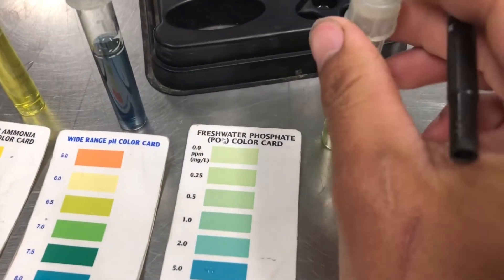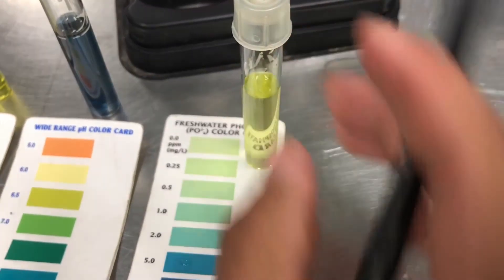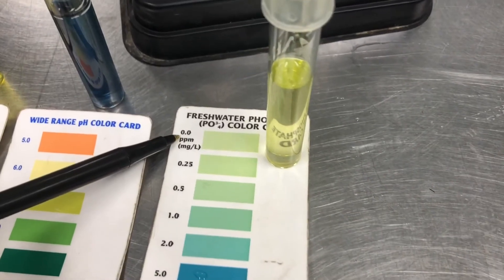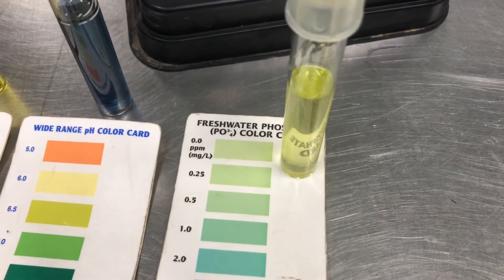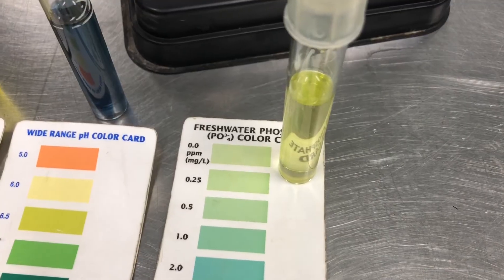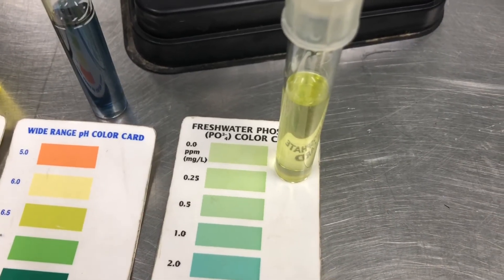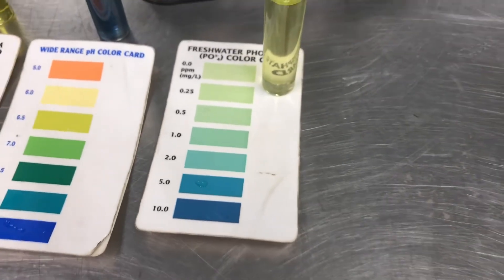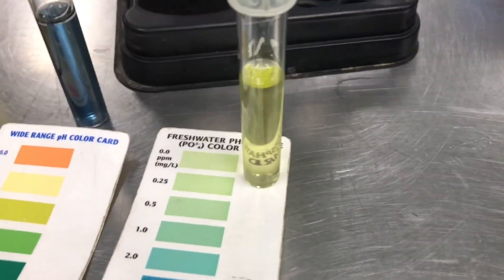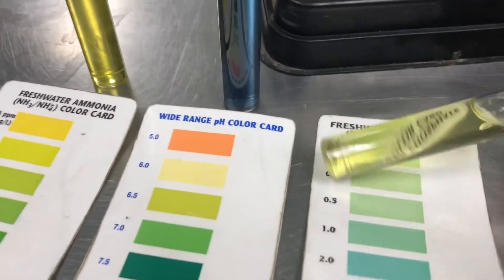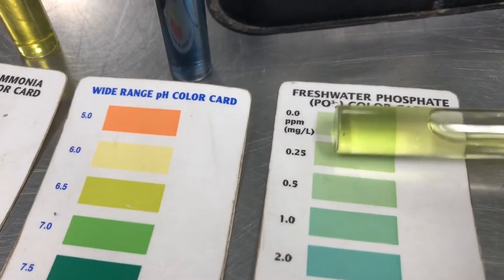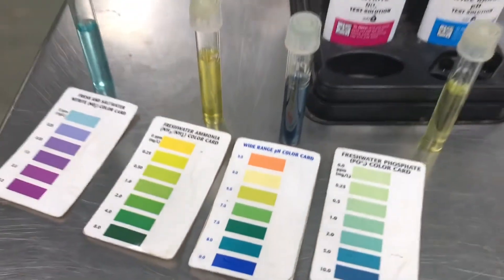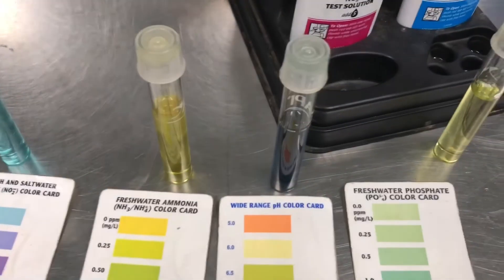And our last test here is your phosphates. Again, phosphates closest to zero as possible. Phosphates, you know, I'd say anything that's the first two or three are pretty okay. But when you start getting into the, you know, the fives and the tens there, that's just getting way too high. So, and you can kind of see this one's, this one's on the lower chart. So, water looks pretty good other than the pH.